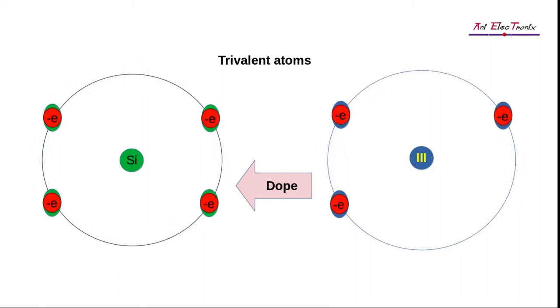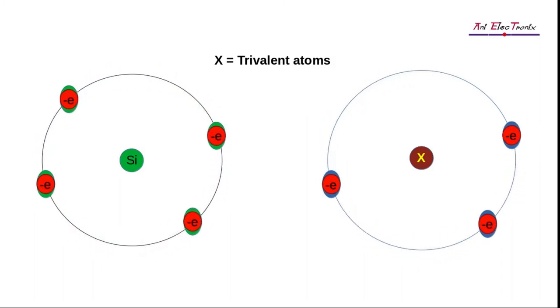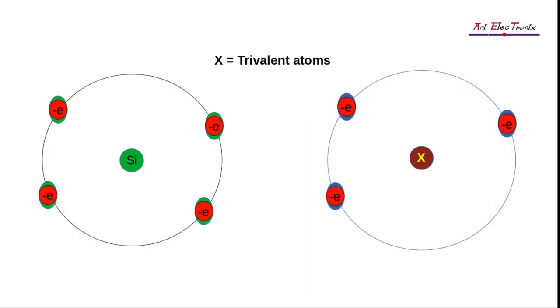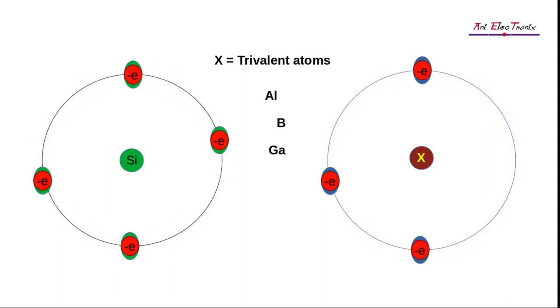To achieve this, we will dope the silicon crystal with trivalent impurities. A trivalent atom has three electrons in its valence orbit. Examples of trivalent elements are aluminum, boron, and gallium.